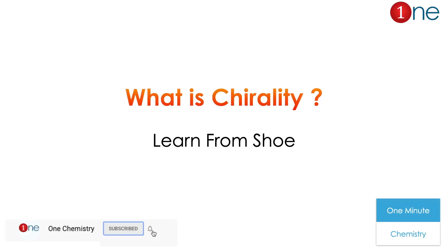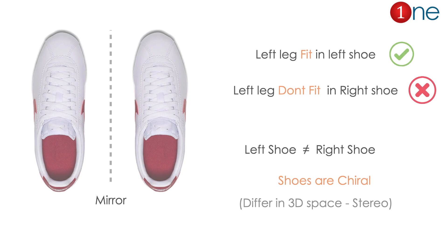Welcome to One Chemistry. We are in the one-minute chemistry series. Now we will see what is chirality — you will learn simply from a shoe. Everybody knows a shoe, right? A shoe definitely fits the right leg, and a left shoe definitely fits the left leg.